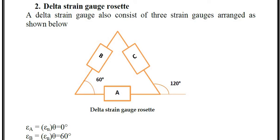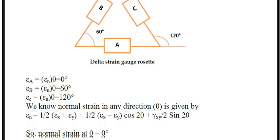The arrangement of the delta strain gauge rosette has different angles. Strain A is at 0 degrees, strain A and strain B have an angle of 60 degrees, and B and C also have an angle of 60 degrees. We put theta equal to 0, theta equal to 60 degrees, and theta equal to 120 degrees into our equation to find three new equations.